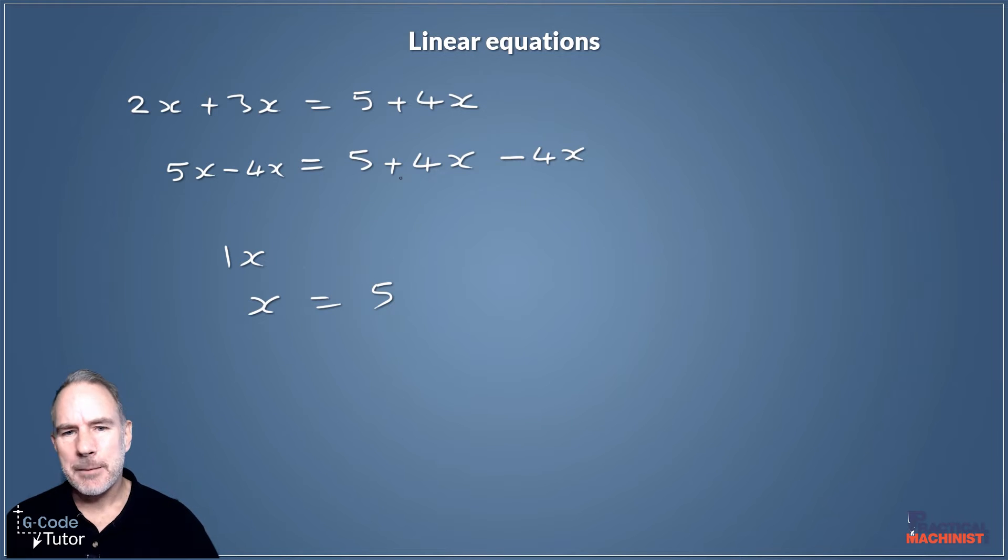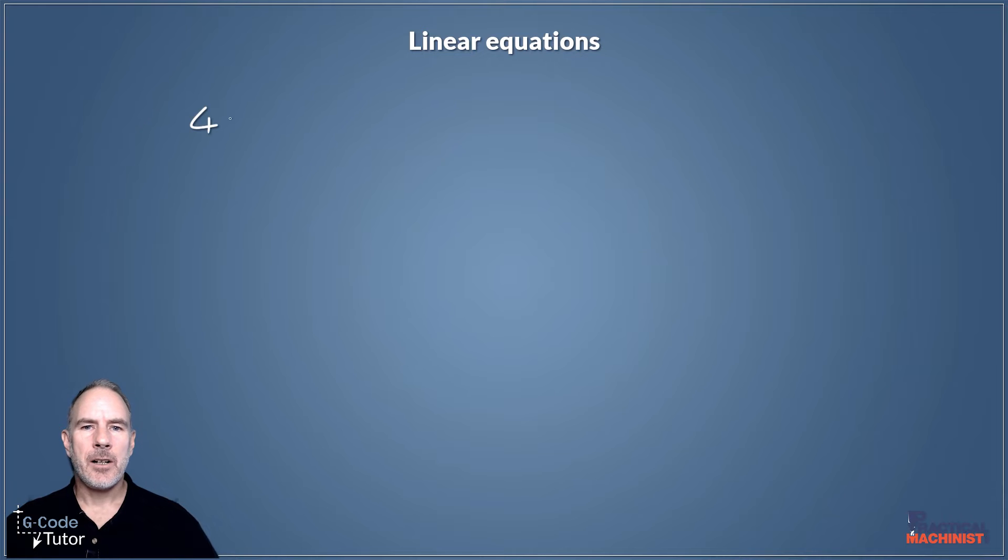Let's look at some more. Let's say 4x plus 5 is equal to 47 minus 3x. So this one looks a little bit more complicated, we've got some bigger numbers there, but the theory is exactly the same. If we keep doing what we've done before and we balance the equation each time, we should get to our answer.